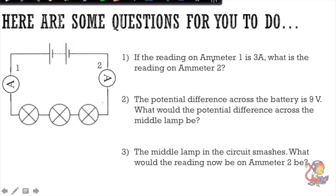So question one, if the reading on ammeter one is 3A, what is the reading on ammeter two? So ammeter one here, if that's three amps, we need to remember our rule that current is the same anywhere in the circuit, so ammeter two would also be three amps.